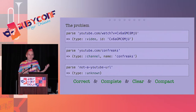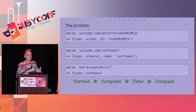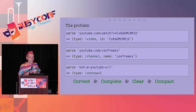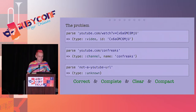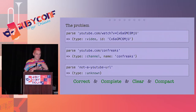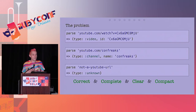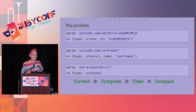What we have here is different URLs — different strings that mean different things. What we're going to try to write is a method called `parse` that accepts a string as input and tells us what type of YouTube resource we are looking at. In the first case, it's a YouTube video, so this method would tell us type video and the ID of the video. In the second case, it's a YouTube channel — type channel and the name of the channel. And the third one is not a YouTube URL, so it's simply type unknown.